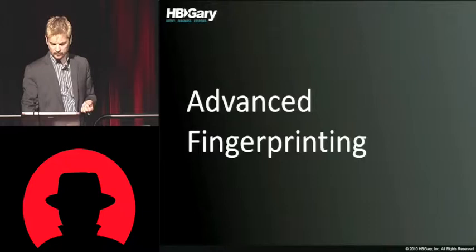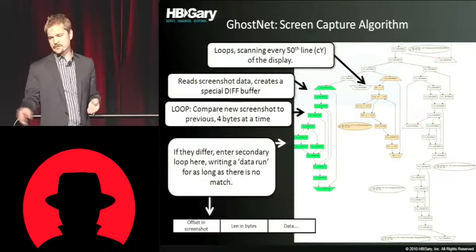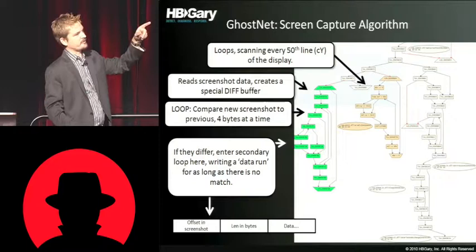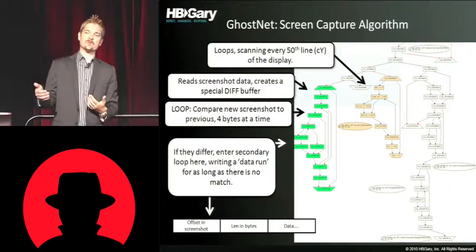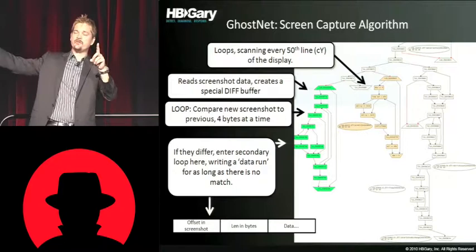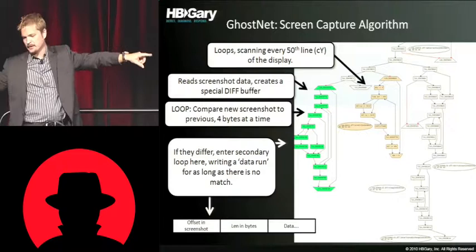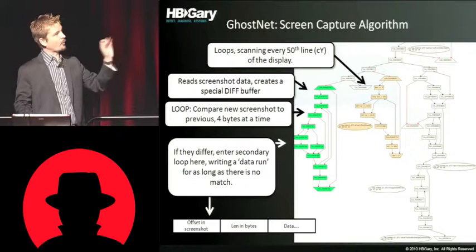This is where we're going to get a lot more interesting. This is GhostNet again — going to the algorithm level, where the algorithm is hardly ever changed because it's so hard to get software to work right. This is the algorithm that does the screen scraping, remote screen scraping of your box with Ghost RAT. Every 50th line on the display, it counts by 50. Then it takes a diff against the previous snapshot, so it's not going to send all the raw data again. It compares those to the previous one four bytes at a time. If they differ, it goes into a secondary loop where it makes a data run until the difference has been resolved. That puts it into a data structure — offset in the screenshot where the data run begins, the length, and then the actual pixel data, downsampled into black and white or grayscale. All of that is so specific that if you were to search your enterprise for that, you're going to find GhostNet.